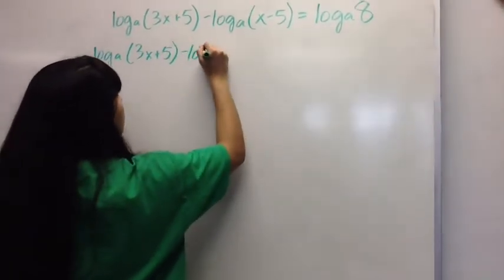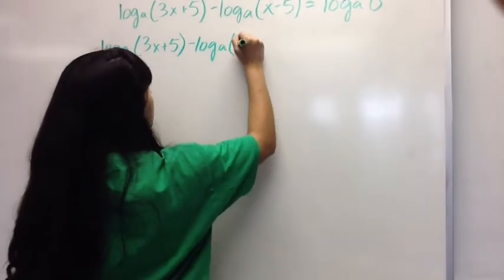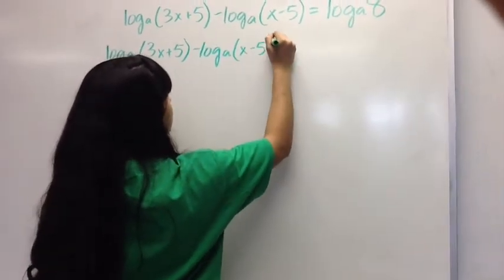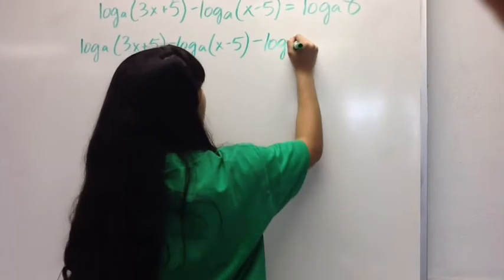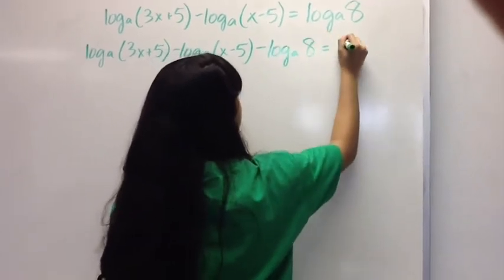Now we want to get all the logs on the same side, so we're going to subtract log to the base a of 8 and set the equation equal to 0.